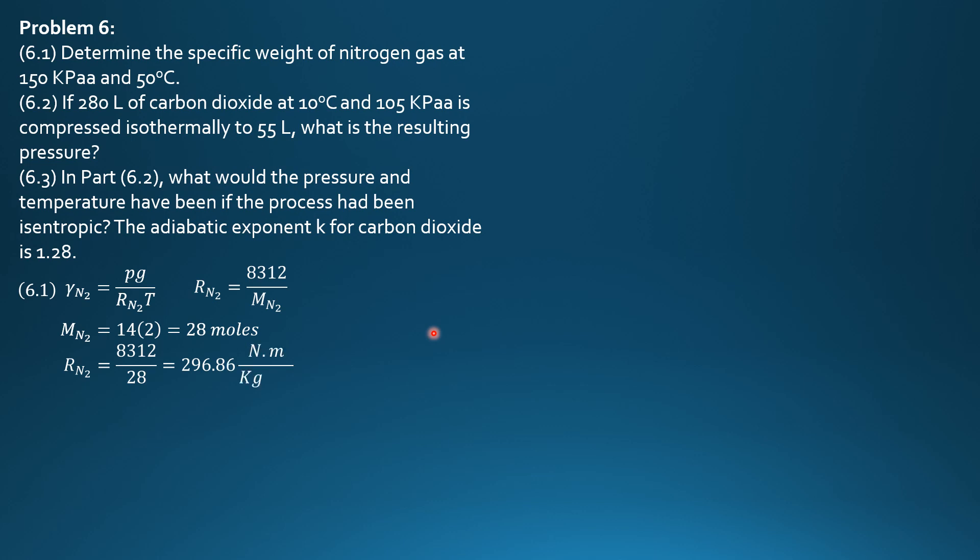296.86 newton meter per kilogram Kelvins. Then substitute 150,000 times 9.81 divided by 296.86 times temperature 50 plus 273. So the specific weight of nitrogen gas is 15.35 newtons per cubic meter at that absolute pressure and temperature.